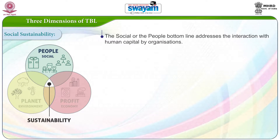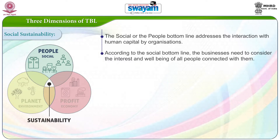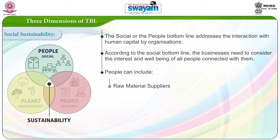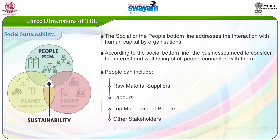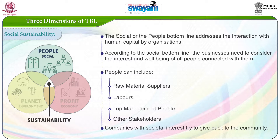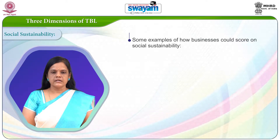The social or the people bottom line addresses the interaction with human capital by organizations. According to the social bottom line, businesses need to consider the interest and well-being of all people connected with them. People can include raw material suppliers, labor, top management, and other stakeholders. Companies with societal interest try to give back to the community also. The following are some examples of how businesses could score on social sustainability.